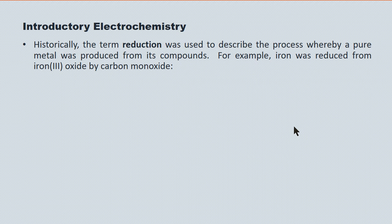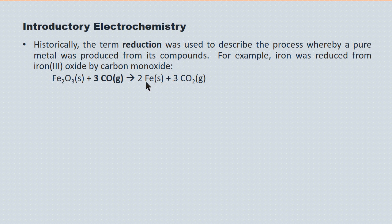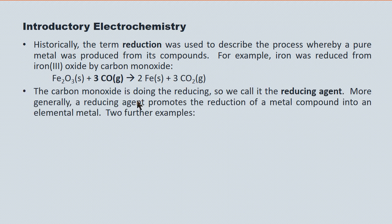Historically, the term reduction was used to describe the process whereby a pure metal was produced from its compounds. For example, iron was reduced from iron(III) oxide by carbon monoxide. The iron(III) oxide is being reduced into elemental iron, and the reducing agent is the carbon monoxide. This remains a very important industrial reducing agent. Reducing agents promote the reduction of a metal compound into an elemental metal.